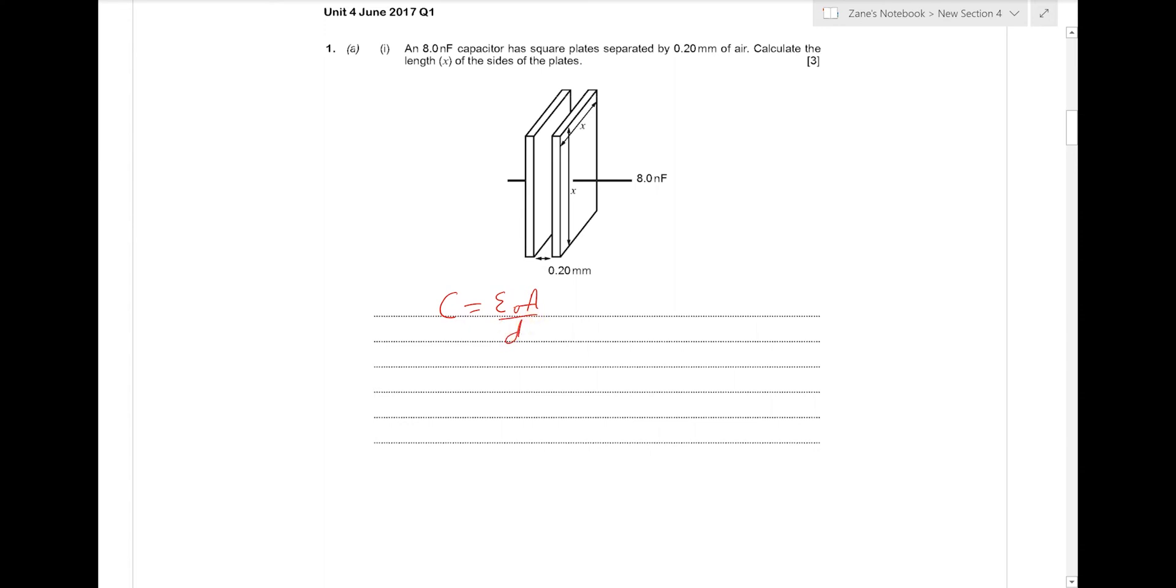To find A, first we can rearrange to give CD over epsilon 0. But also remember that A here will be x squared, where x is the variable we're trying to find. So x is going to equal the square root of CD over epsilon 0.